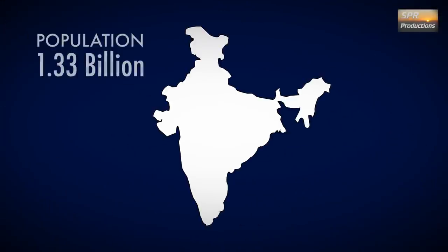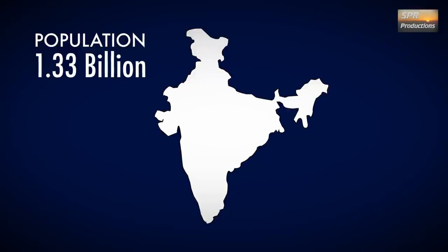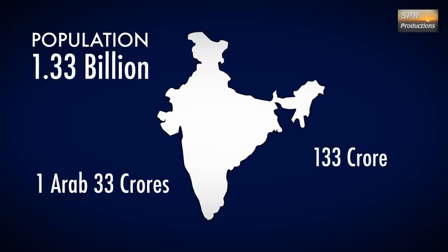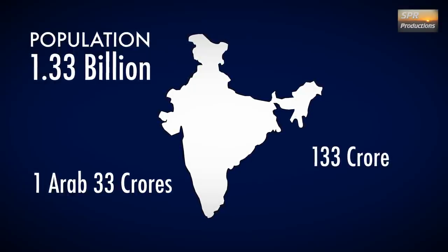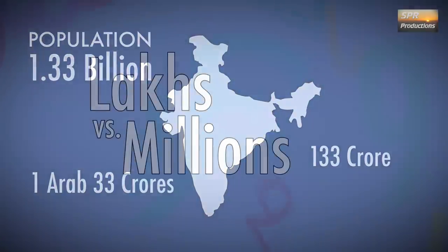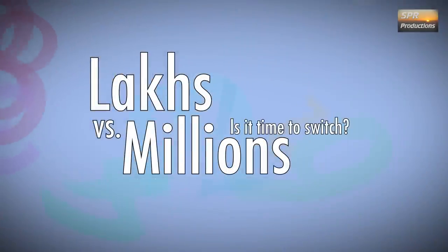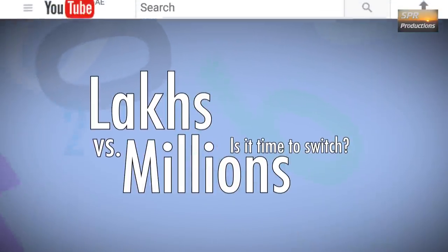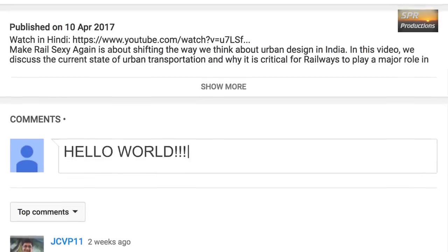Our population at the time of recording this is 1.33 billion people, which could also be written as 1 Arab 33 crores, or 130 crore. Changing the way that many people count is no easy task. So should India switch from counting in lakhs and crores to using millions and billions? Let me know in the comment section below.